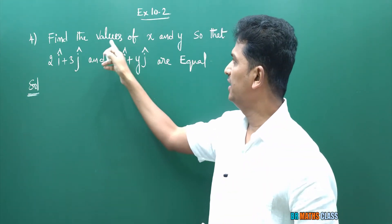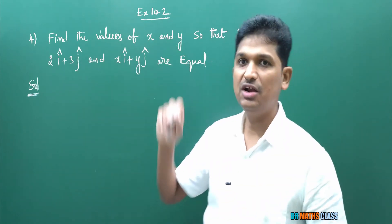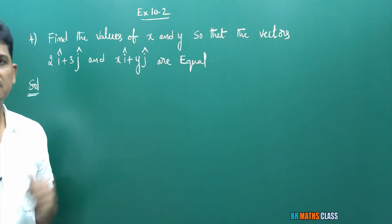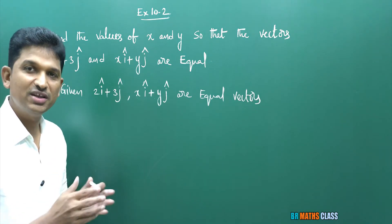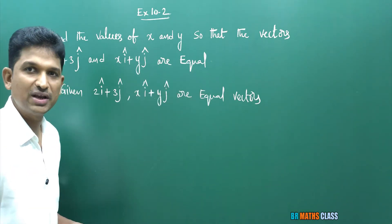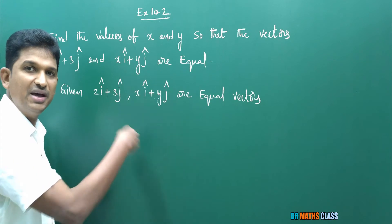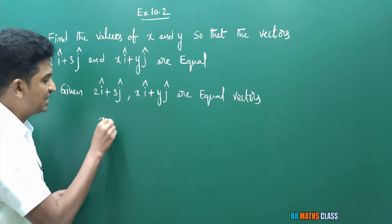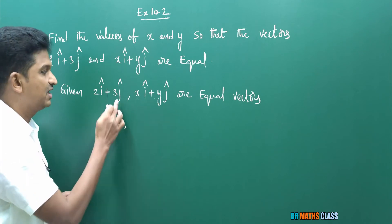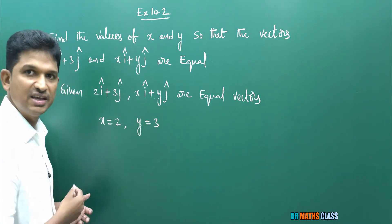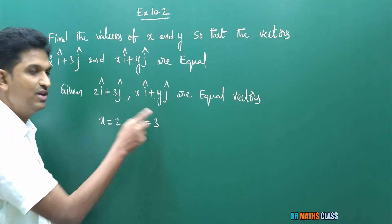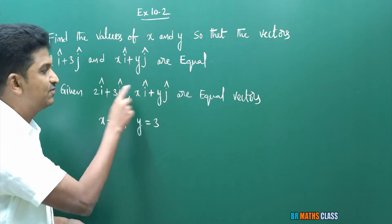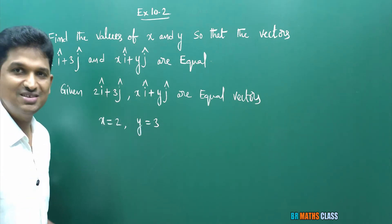Question 4: find the values of x and y. They give two vectors and state that these two vectors are equal. If the two vectors are equal, compare their scalar components. The i bar component is x on one side and 2 on the other, so x = 2. The j bar component is y on one side and 3 on the other, so y = 3. Very simple.